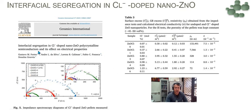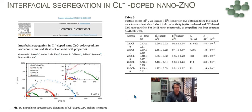In this impedance spectroscopy diagram, we can see that increasing chlorine in zinc oxide decreases the total resistivity. The total resistivity decreases with chlorine, and consequently we have an increase of conductivity. This semicircle is referred to the grain boundary resistance. There is a strong decrease in grain boundary resistivity, and as a consequence, an increase of total conductivity. This is very important for having more time for electrons and holes to migrate without recombination, and thus increasing the photocatalysis.